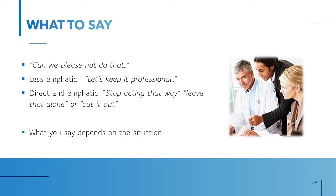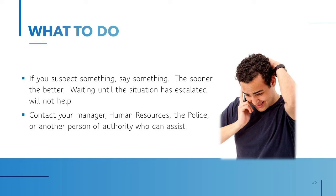When intervening in an escalating conversation, calm the person down by saying things like 'Can we please not do that?' or, less emphatic, 'Let's keep it professional.' However, you may want to escalate your own response by being more direct — saying something like 'Stop acting that way,' 'Leave that alone,' or 'Cut it out.' Depending on the situation, you may want to escalate your voice and words to be even more direct and emphatic. And if you suspect something, say something — the sooner the better. Waiting until the situation has escalated will not help; you may be past the point of no return.